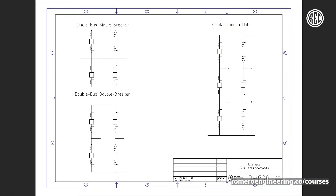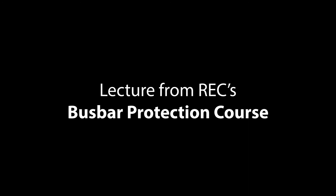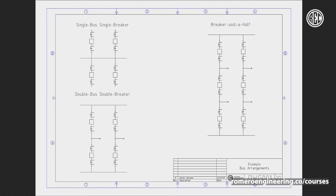The first thing we need to talk about before we move into bus protection is the different types of bus arrangements we can find in a power system. Buses exist throughout the power system wherever two or more circuits need to be interconnected — it's a common point of interconnection. For example, if we had a transformer feeding several feeders at a distribution substation, we'd have a bus connecting the transformer to the different feeders.